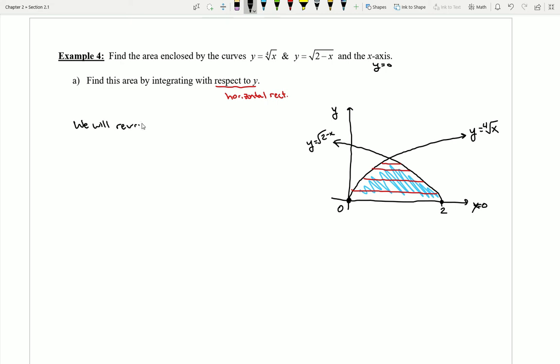So let's see, we will rewrite our functions as, I have a Y equals fourth root of X. That's going to transform into X equals Y to the fourth, and I have Y equals a square root of 2 minus X. That's going to transform into X equals, let's see what we would get for that, I'm going to get a 2 minus a Y squared.